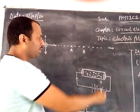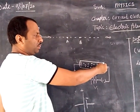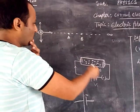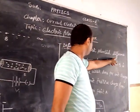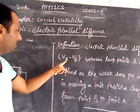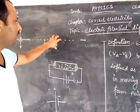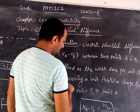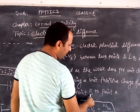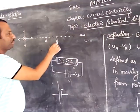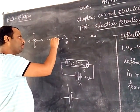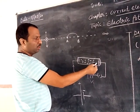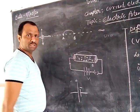The potential difference is the amount of work done to bring a unit positive charge from one end of the conductor to the other — from point B to point A. Point B is at lower potential, so the charge moves from lower potential to higher potential. The electrons move from lower potential to higher potential.